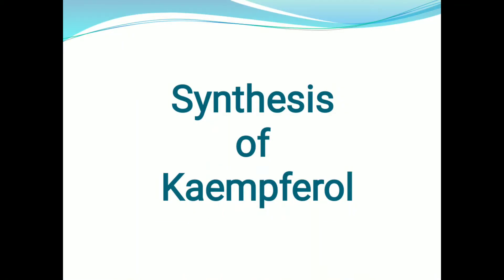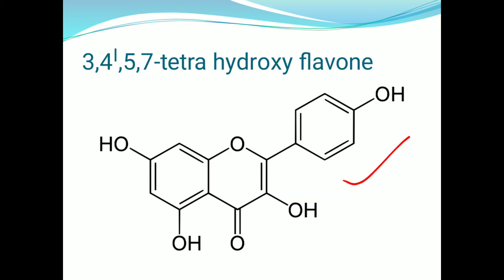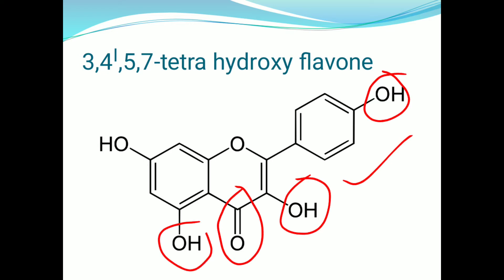Good morning students. Today we discuss the synthesis of camphorole. In the last class we learned about the structural elucidation of camphorole. This is the structure of camphorole. This structure contains a C=O group and four hydroxy groups, which are present at the 4, 3, 5, and 7 positions.